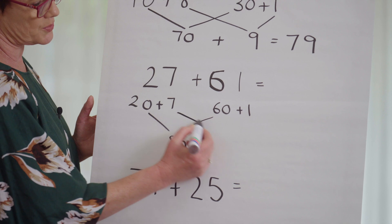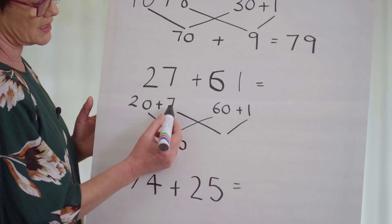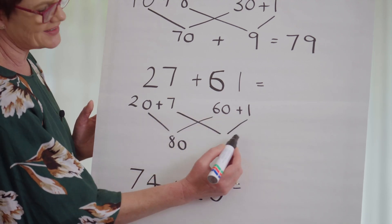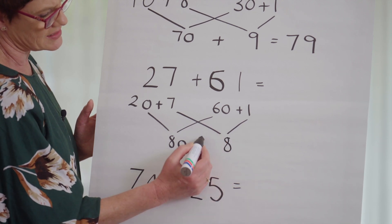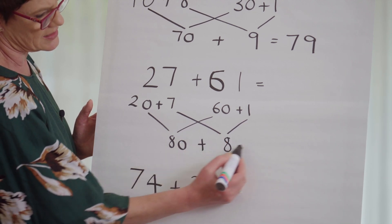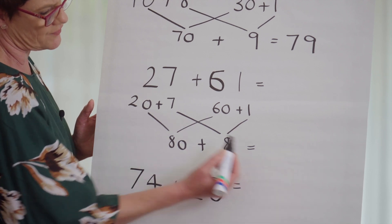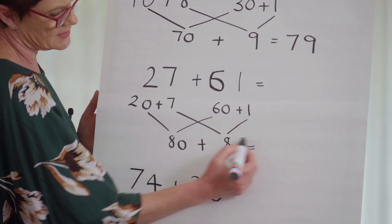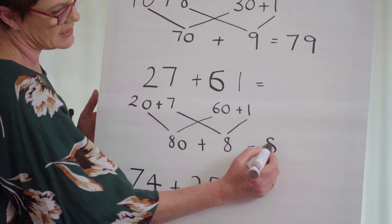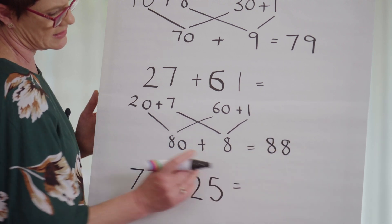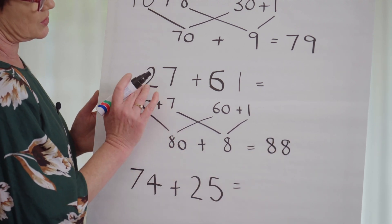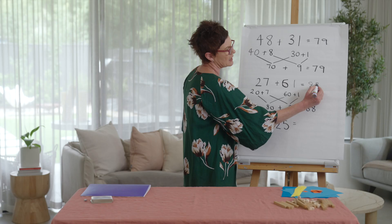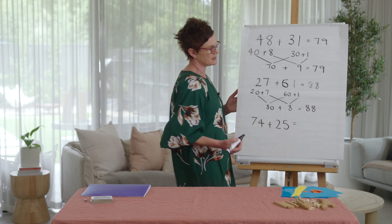And let's put our ones together: 7 and 1 — one more than 7 is 8. Now I've got my tens together and my ones together. I can see that my answer is 88. So 27 and 61 is 88. Now we're cooking!